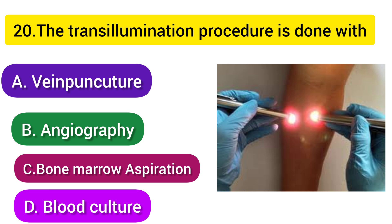Next question: The transillumination procedure is done with which of the following? Option A: Vein puncture, Option B: Angiography, Option C: Bone marrow aspiration, Option D: Blood culture. Transillumination works like shining a light through tissue, similar to holding paper up to light, allowing visualization. Option A - Vein puncture is the correct answer.